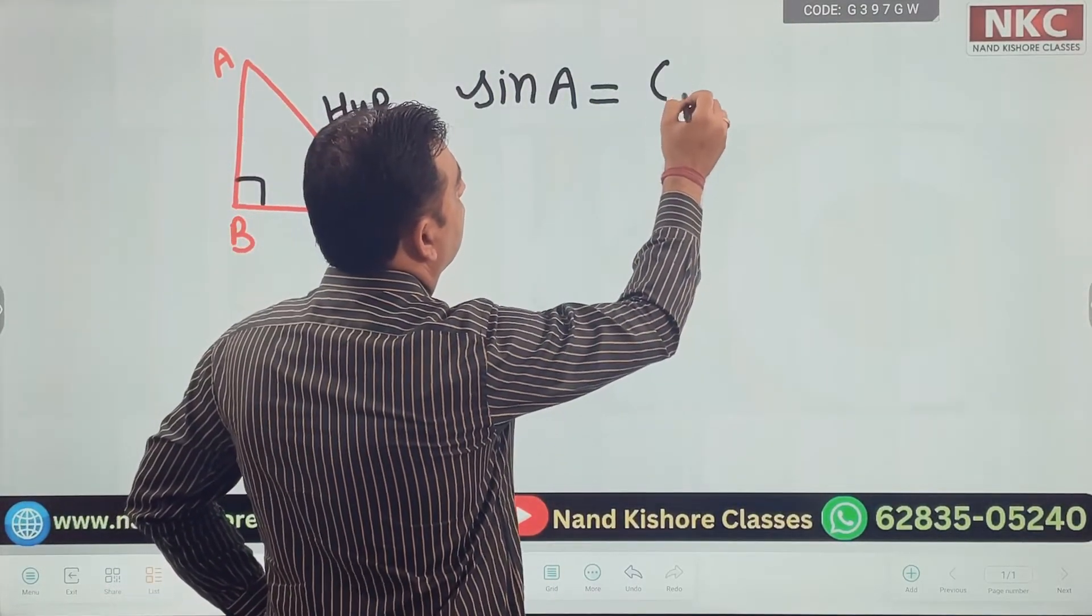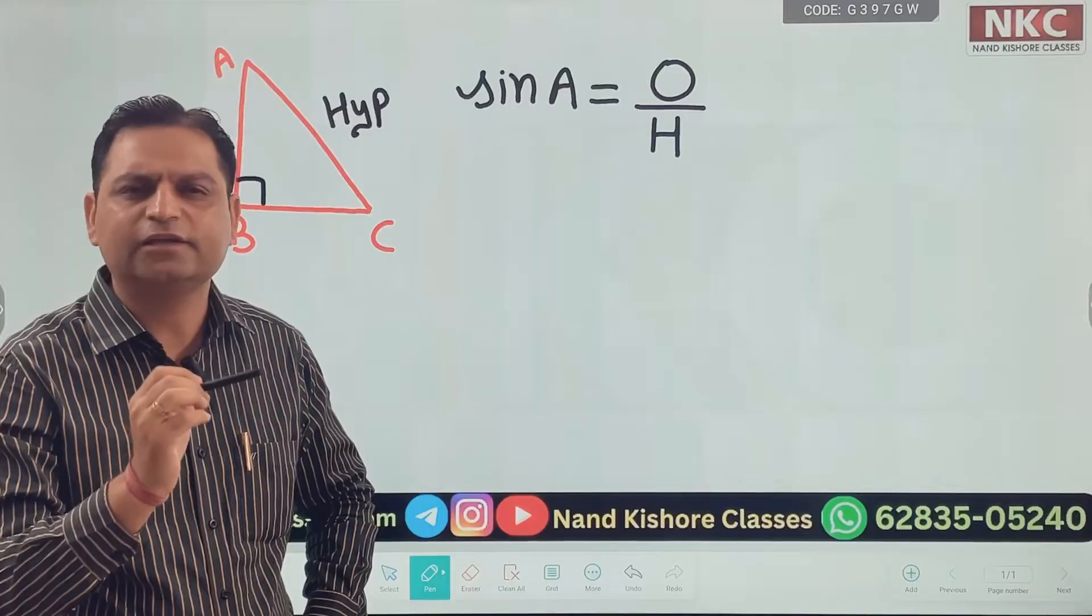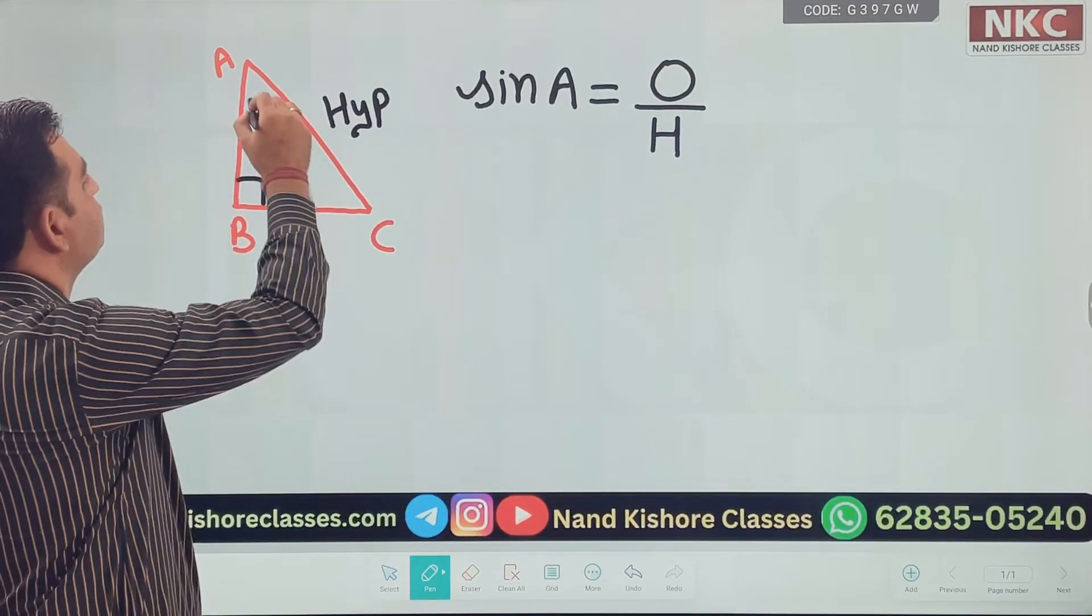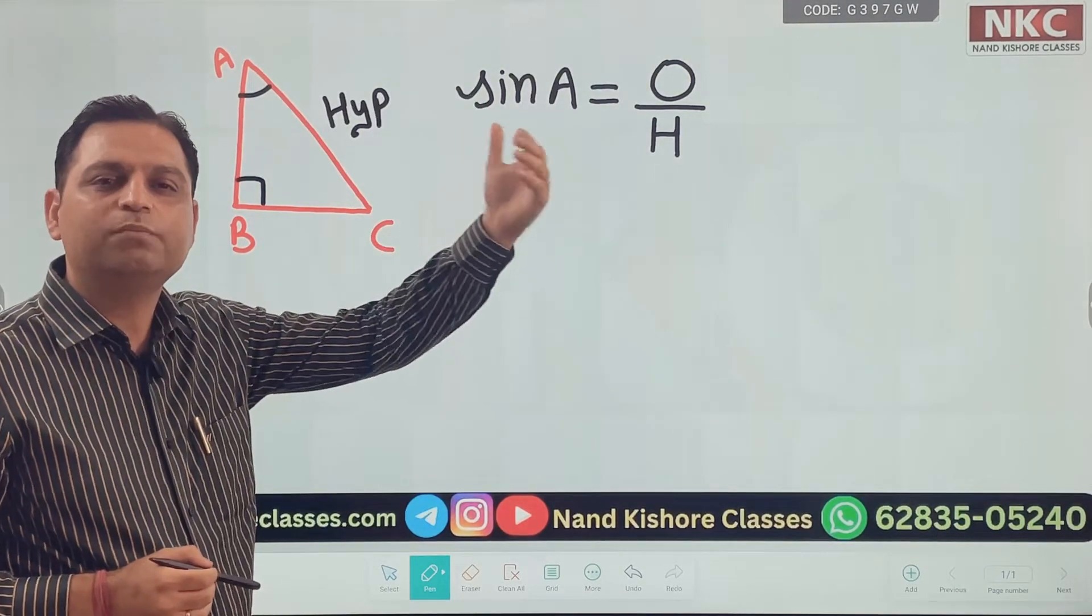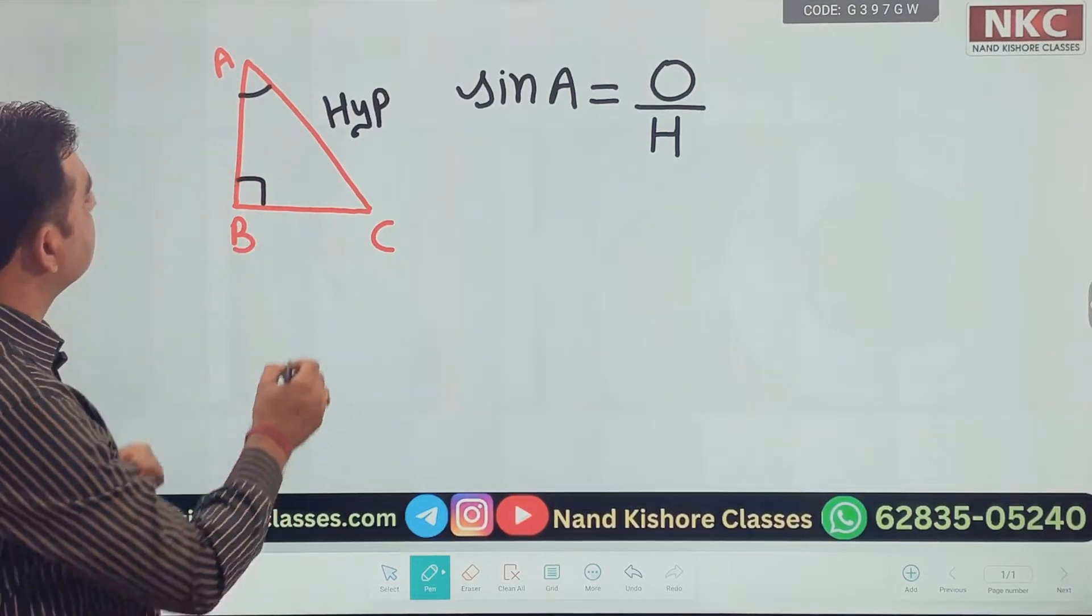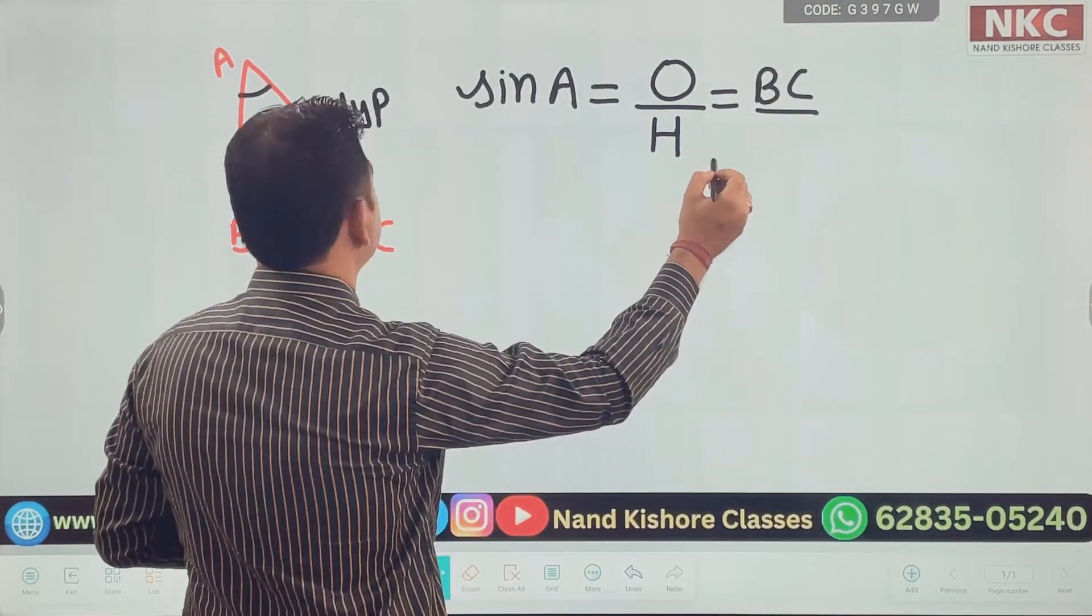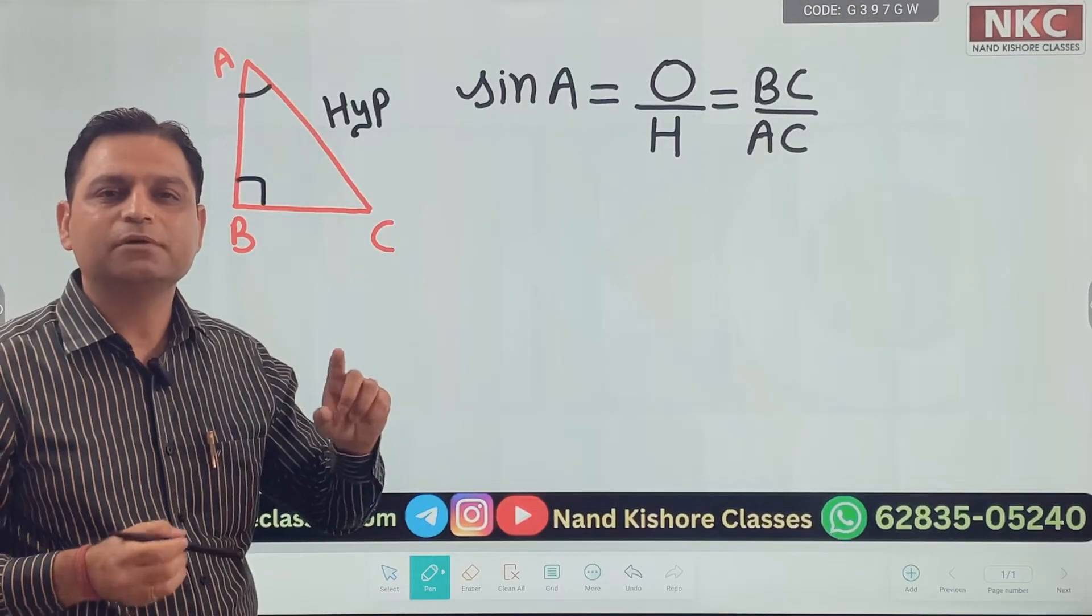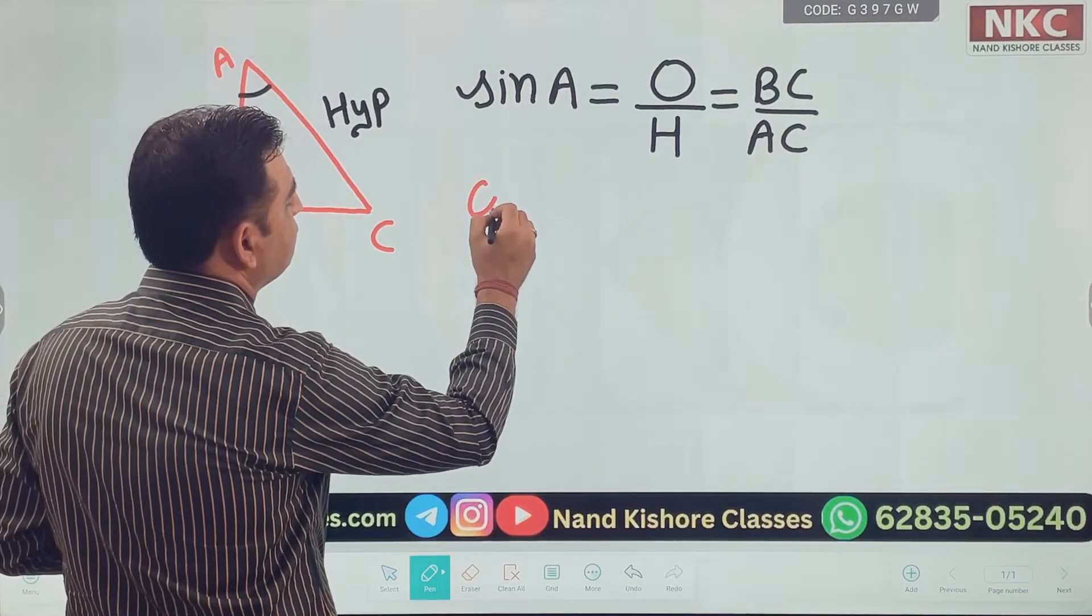Let us have a look. Sin is opposite over hypotenuse. O means opposite H over hypotenuse. Now, what is the meaning of opposite? Opposite means, let us suppose this is angle A. We are using angle A here. Side opposite to angle A they are talking about. Now, which one is this side opposite to angle A? Let me write this is BC. So, we will write BC here. And what is hypotenuse? It is AC. That is how it is used. So, do remember sin is always opposite over hypotenuse.